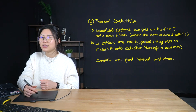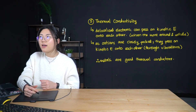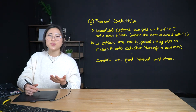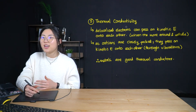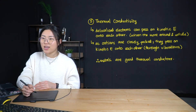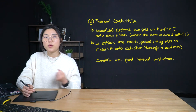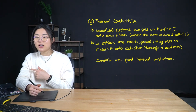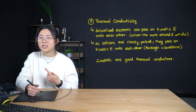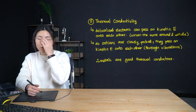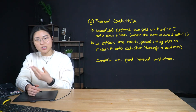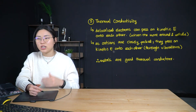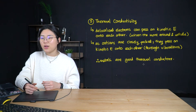The next property is thermal conductivity. Metals are good thermal conductors. Delocalized electrons can pass kinetic energy onto each other when they move around and collide. And as cations are closely packed, they pass kinetic energy onto each other directly through vibrations. So electrons can move around and collide passing on kinetic energy, while cations can't move but can vibrate, and because they're so closely packed they pass energy to each other. Therefore, metals are good thermal conductors.